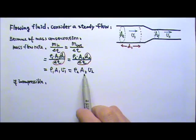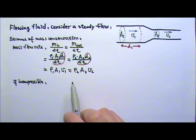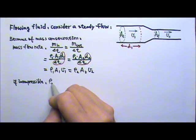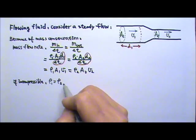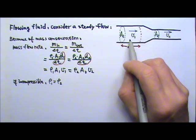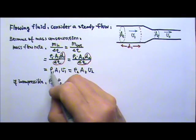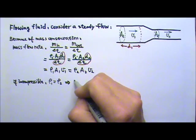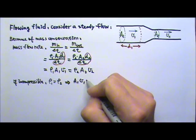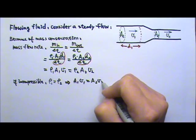And if the fluid is incompressible, that means the density stays the same. The density doesn't change just because the fluid flows to the other side. And that means rho 1 and rho 2 can cancel, and we're going to get a1v1 equals to a2v2.